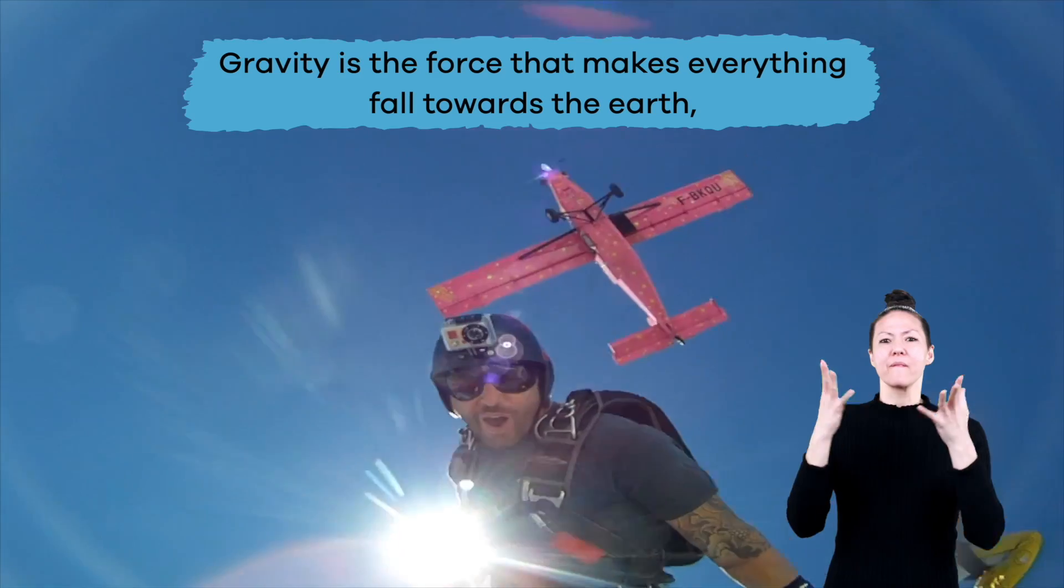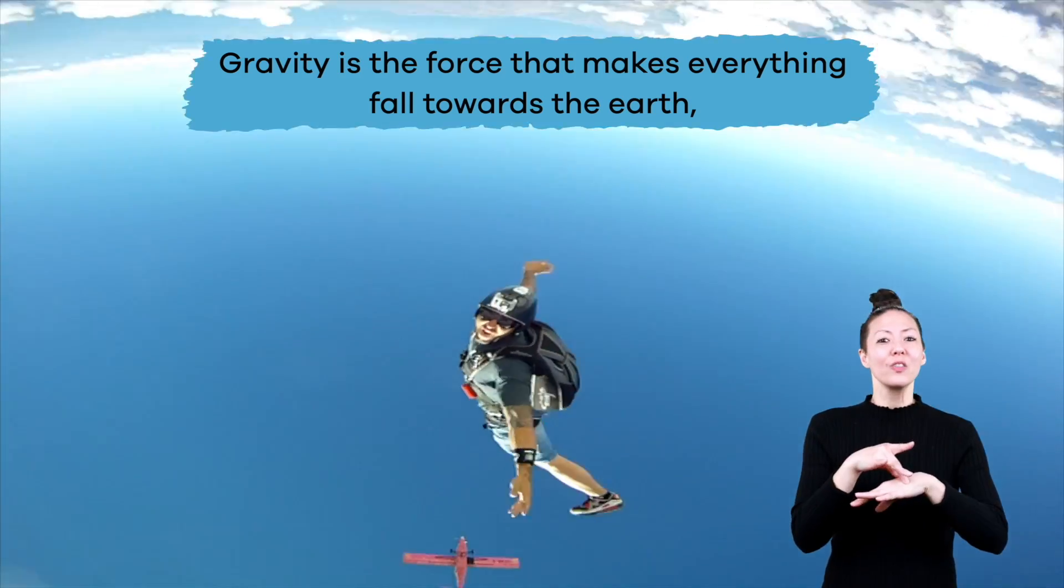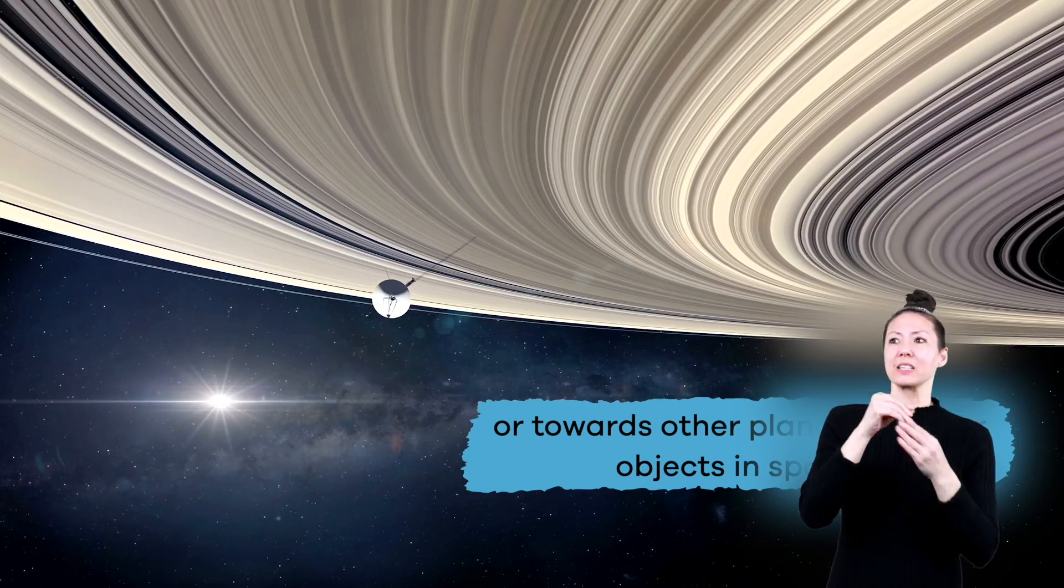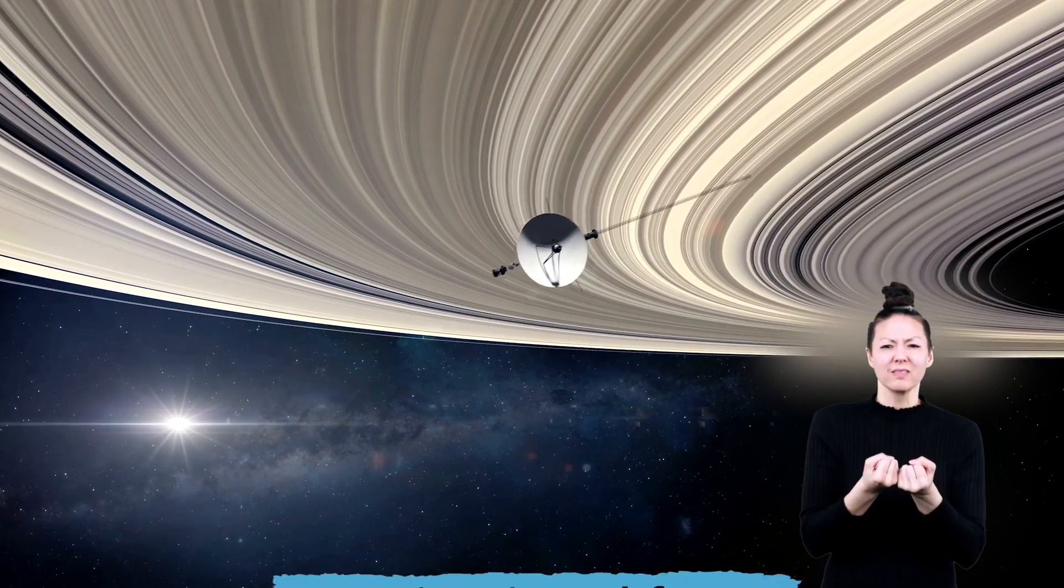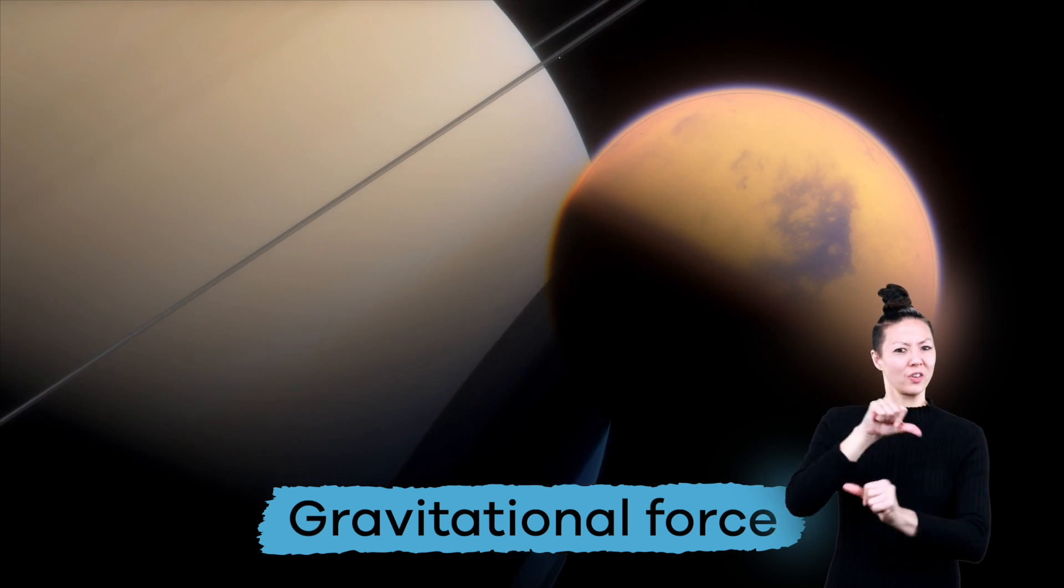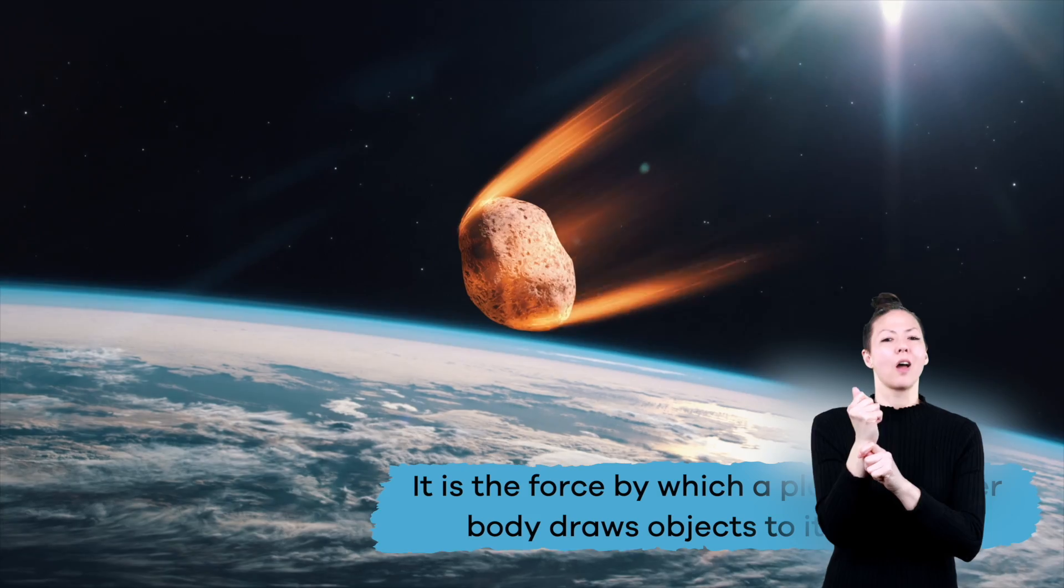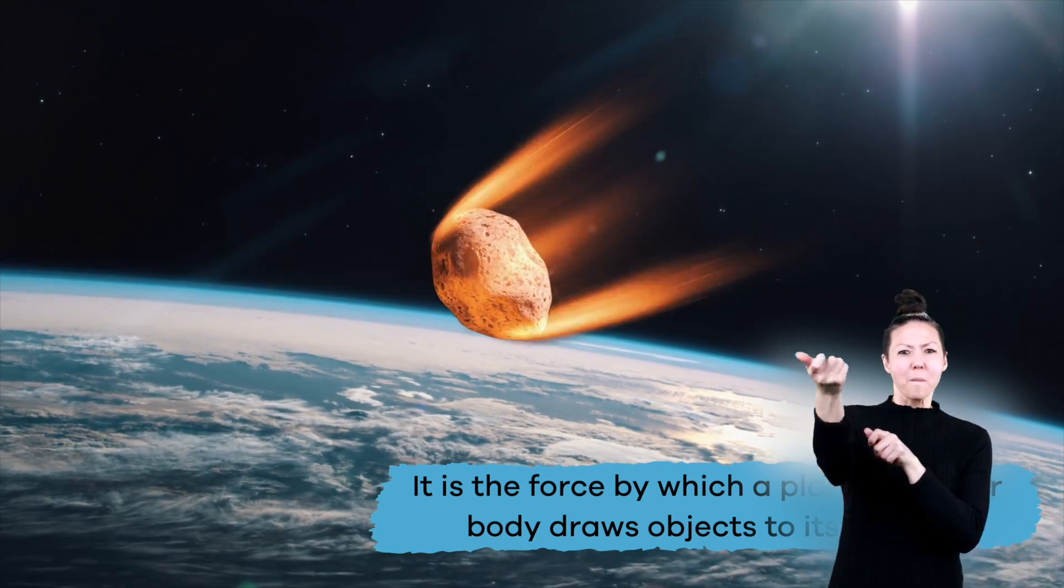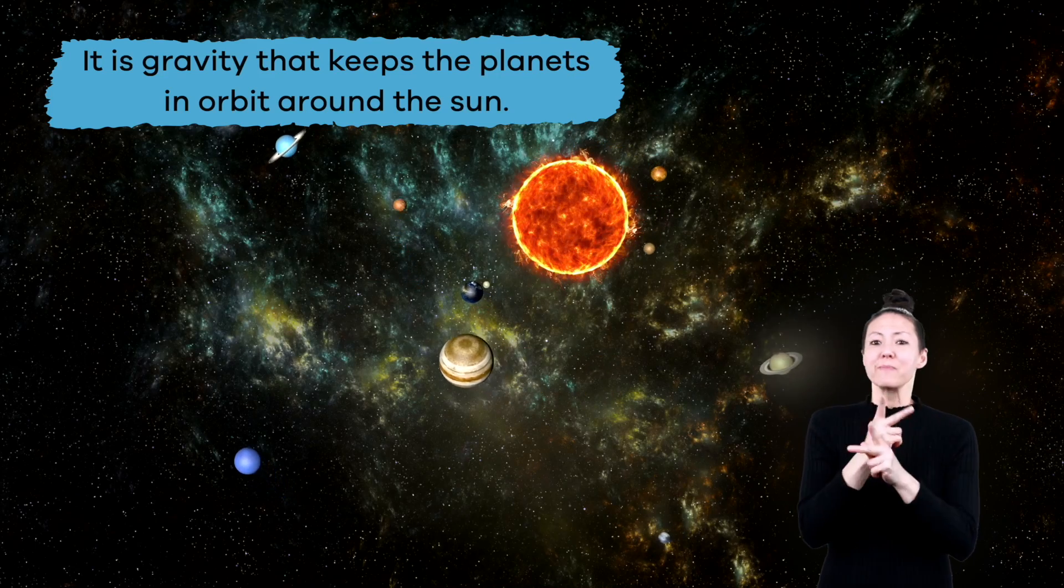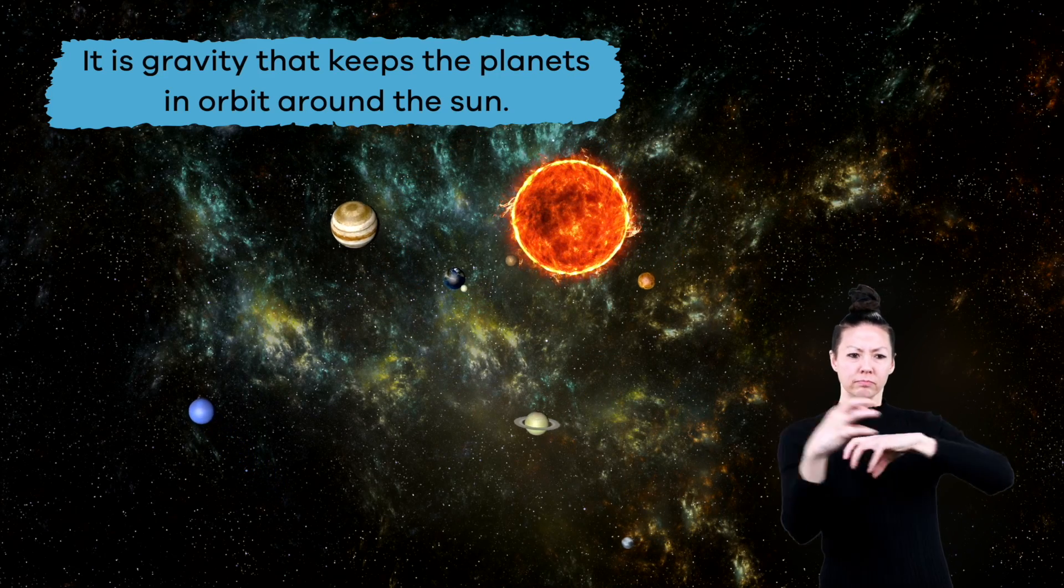Gravity is the force that makes everything fall towards the Earth or towards other planets or other objects in space. Gravity, or gravitational force, attracts all objects toward each other. It is the force by which a planet or other body draws objects to its center. And it is gravity that keeps the planets in orbit around the Sun.